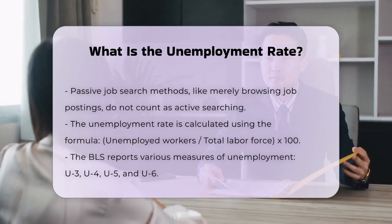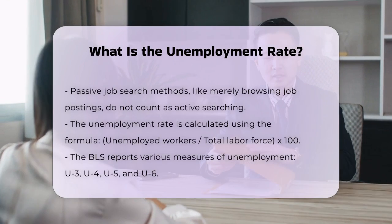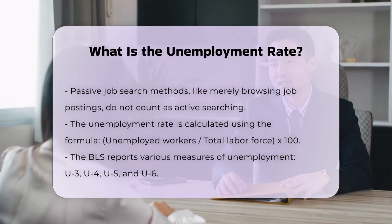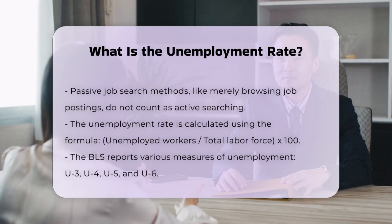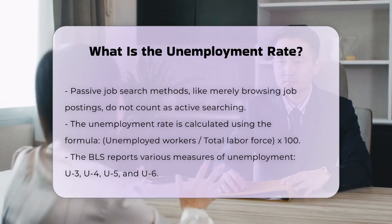Different measures of unemployment. The U.S. Bureau of Labor Statistics (BLS) reports several measures of unemployment, including U3, the official unemployment rate, which includes people who are unemployed and have actively sought work within the past four weeks.